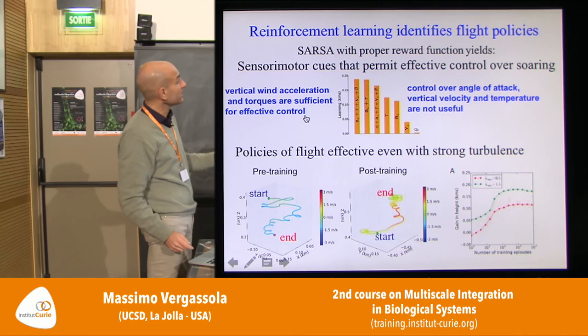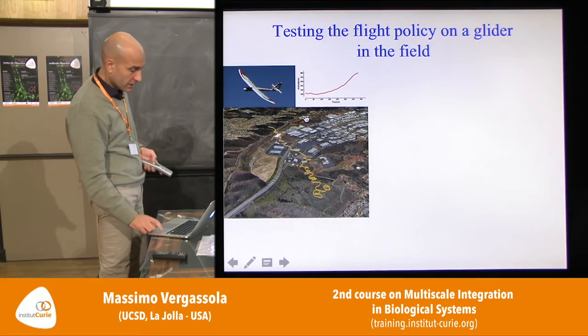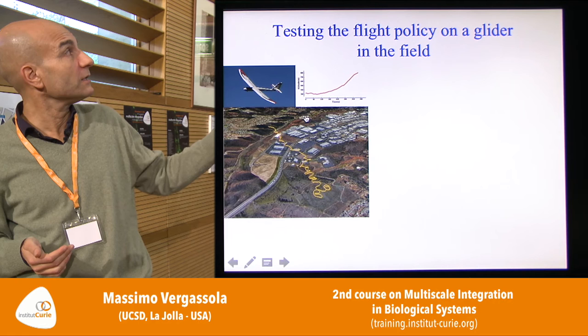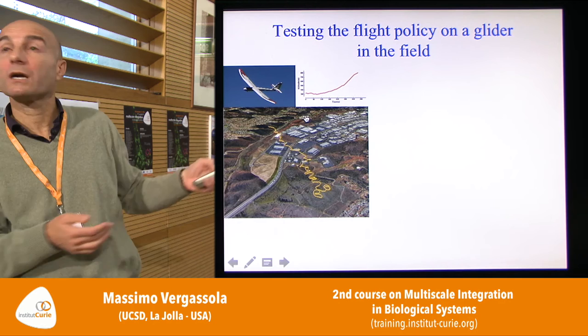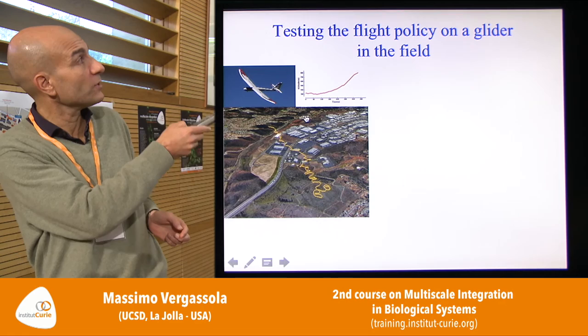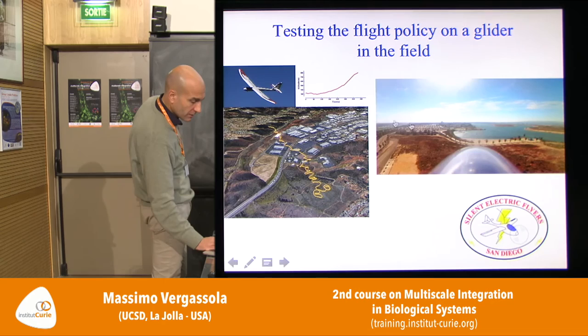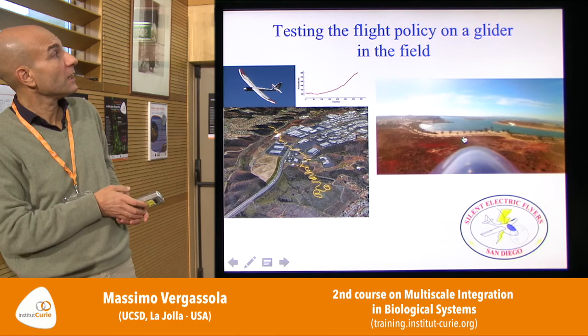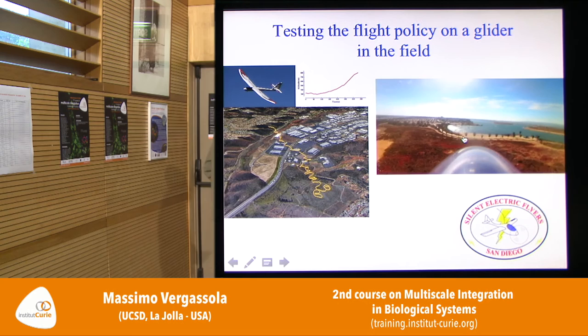These are the results from simulations, and we're now testing this in the field on a real glider. This shows the kind of height gain we get in the field. The trajectories show the glider spiraling around the ascending current — the thermal is below, and you can see it spiraling. This is done in open fields where the ground is heated, generating convective currents.